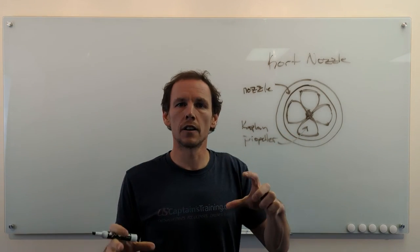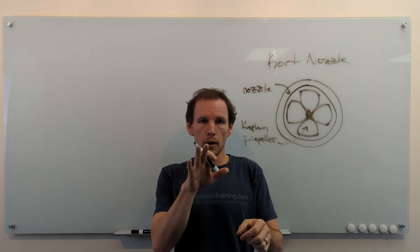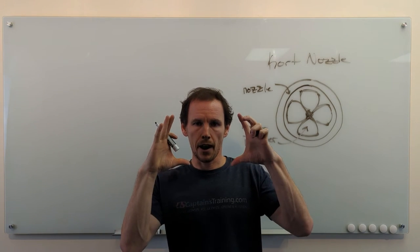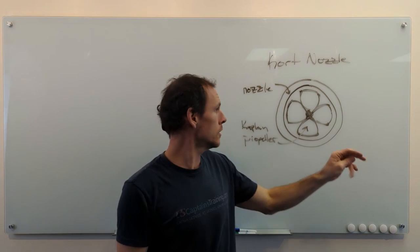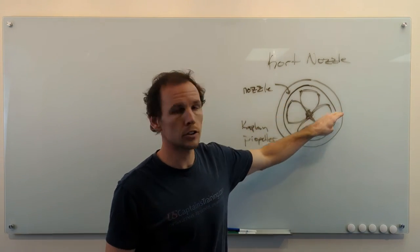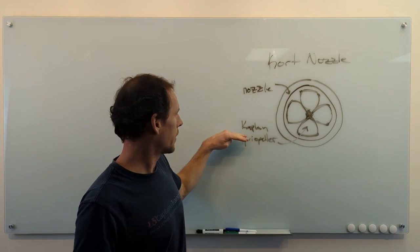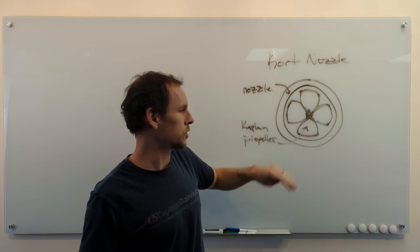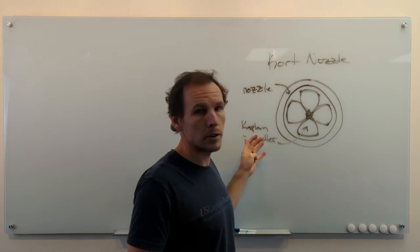This is what you would see if you looked on the back of a towboat or a tugboat. You look at the back of the kort nozzle, it would look like this. We got the nozzle, which is that steel structure around the propeller, and then the propeller, which is generally a Kaplan style propeller.